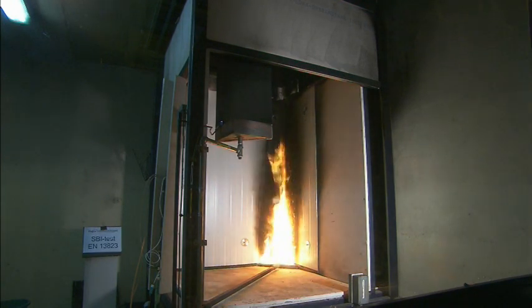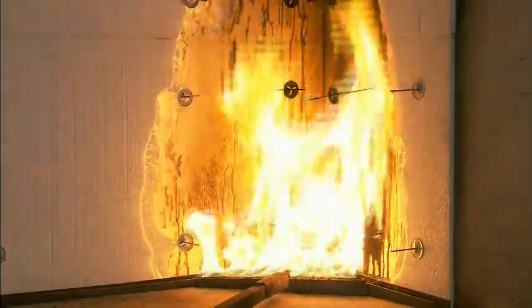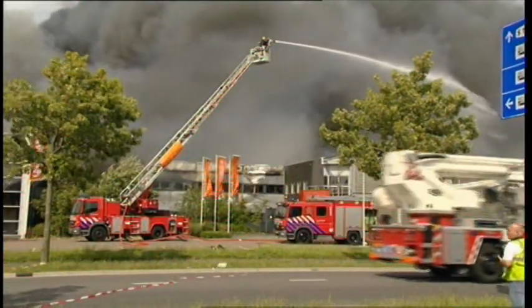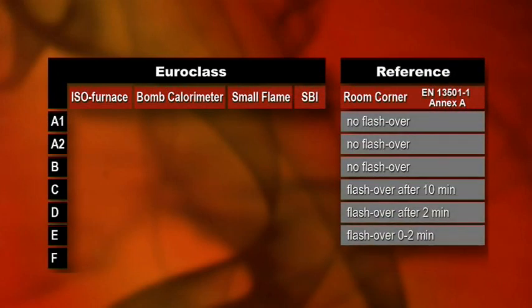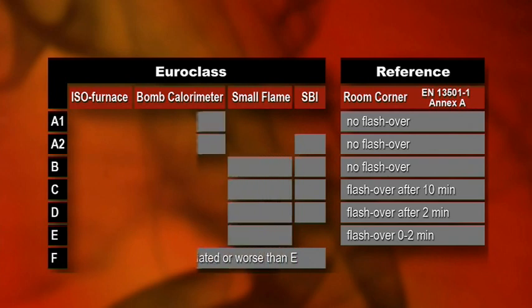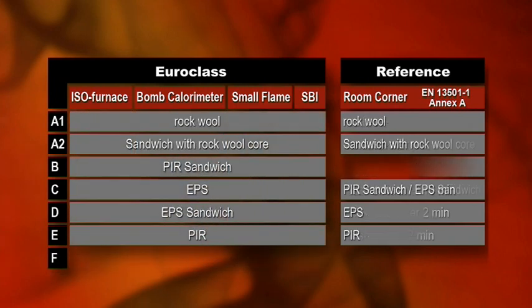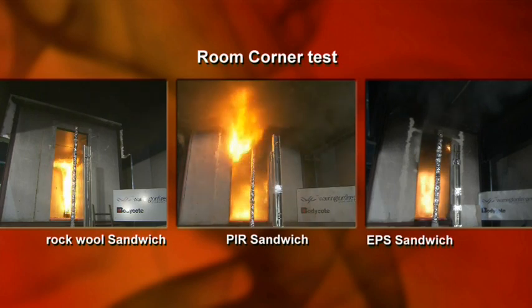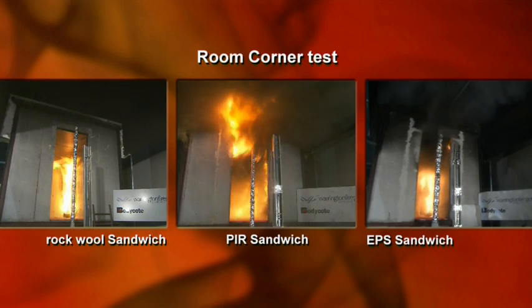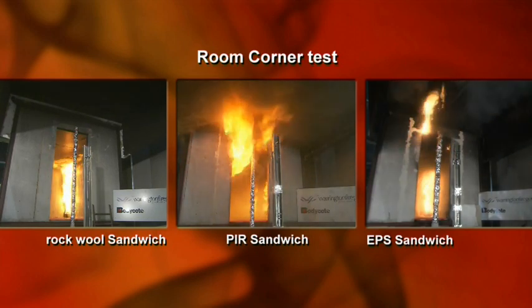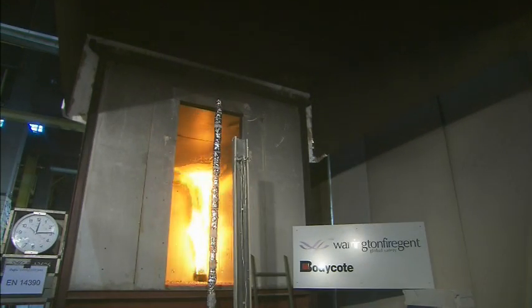Another problem with the SBI test is that it only tests vertically, making it not representative for a roof — just think of falling burning droplets. In addition, only a fire from the inside is simulated, while the source of a fire on the outer wall could also be an adjacent building or a fire in a stack of pallets placed against the outer wall. The room corner reference test based on EN 14390 may consequently deviate from the officially assigned Euro class. Rock wool products are clearly differentiated from PIR and EPS in this test due to the incombustibility of the insulation material.